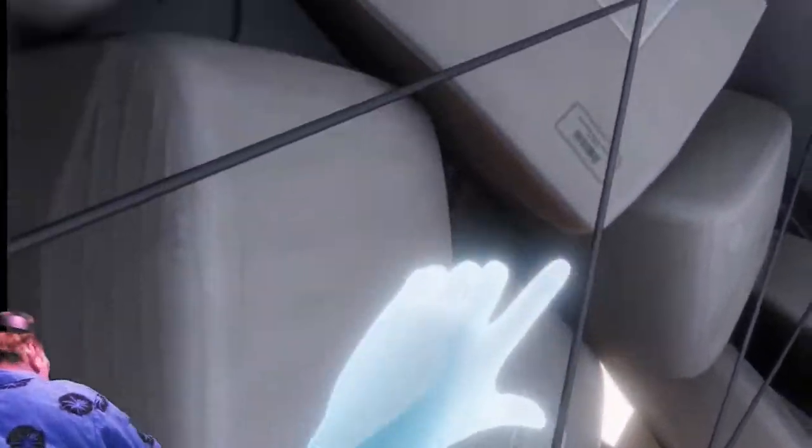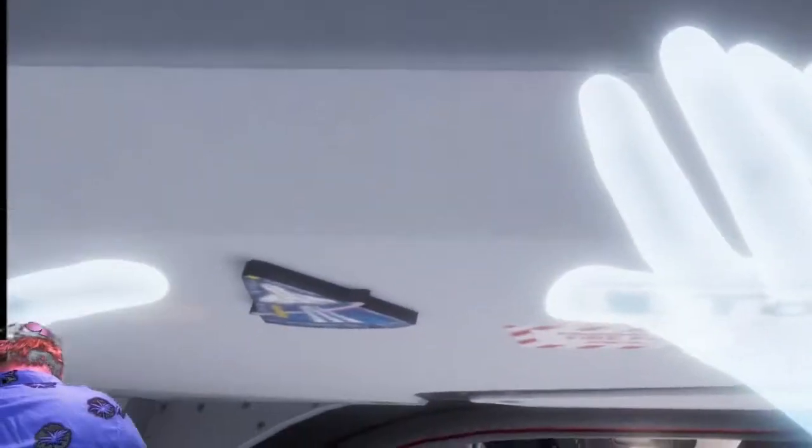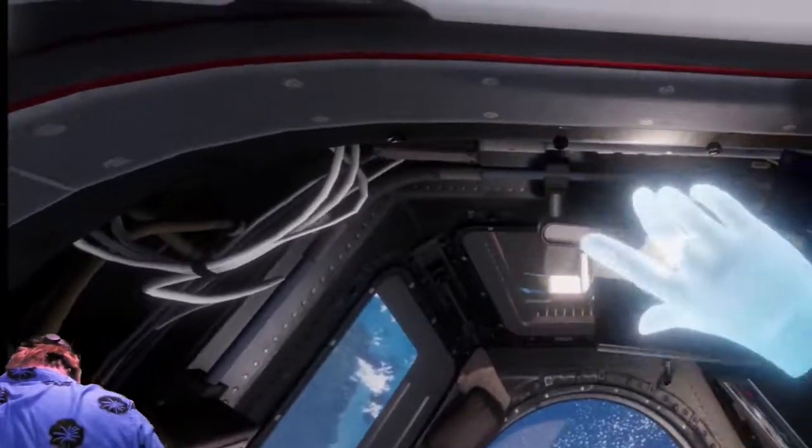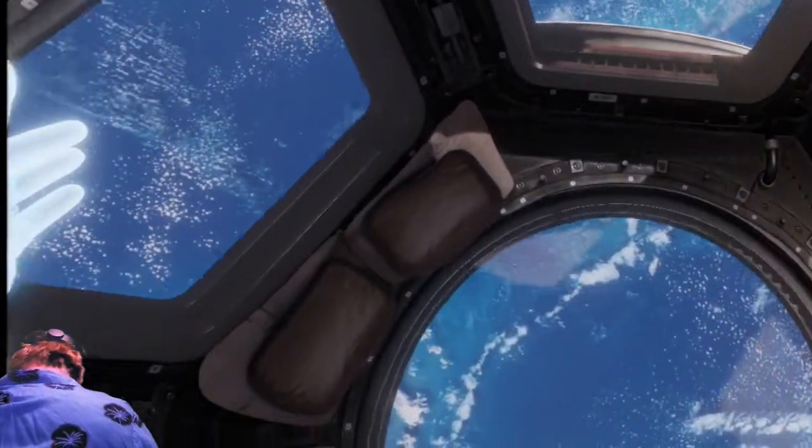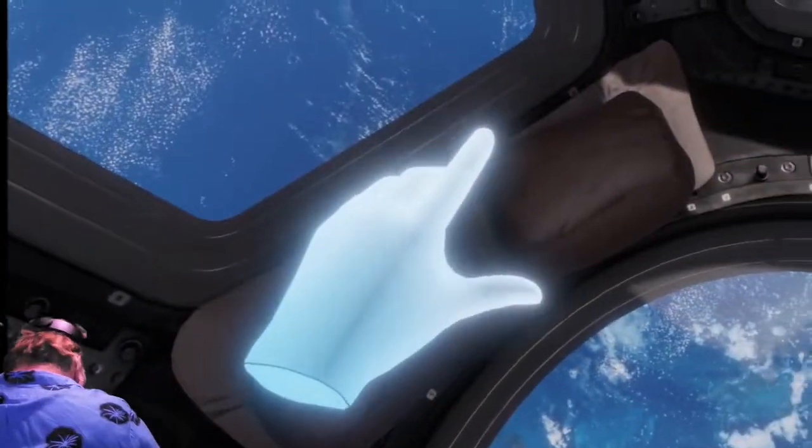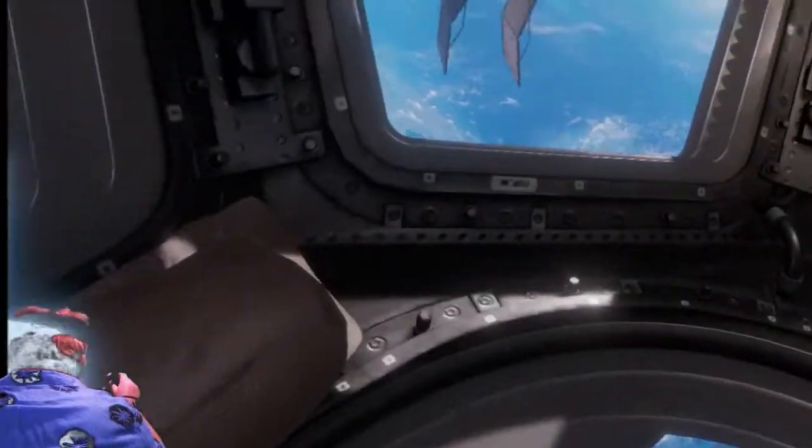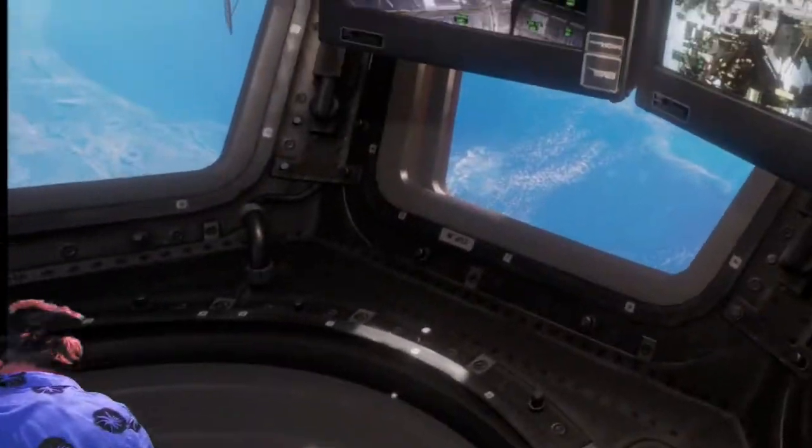That's right, this one's where they take their photos. And actually this is a control module too, where they can control the arm. Let's go down there. This is, I guess, everybody's favorite spot, because you can actually take a look outside.